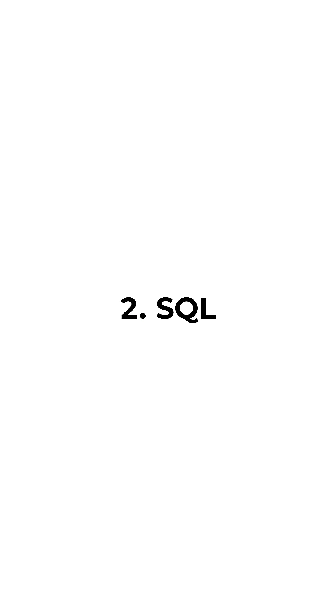The first topic in the data science syllabus is programming — specifically Python programming. After learning Python, you should learn SQL, structured query language. You can learn either MySQL or PostgreSQL. MySQL is mostly used for OLTP operations, while PostgreSQL supports both OLAP and OLTP.